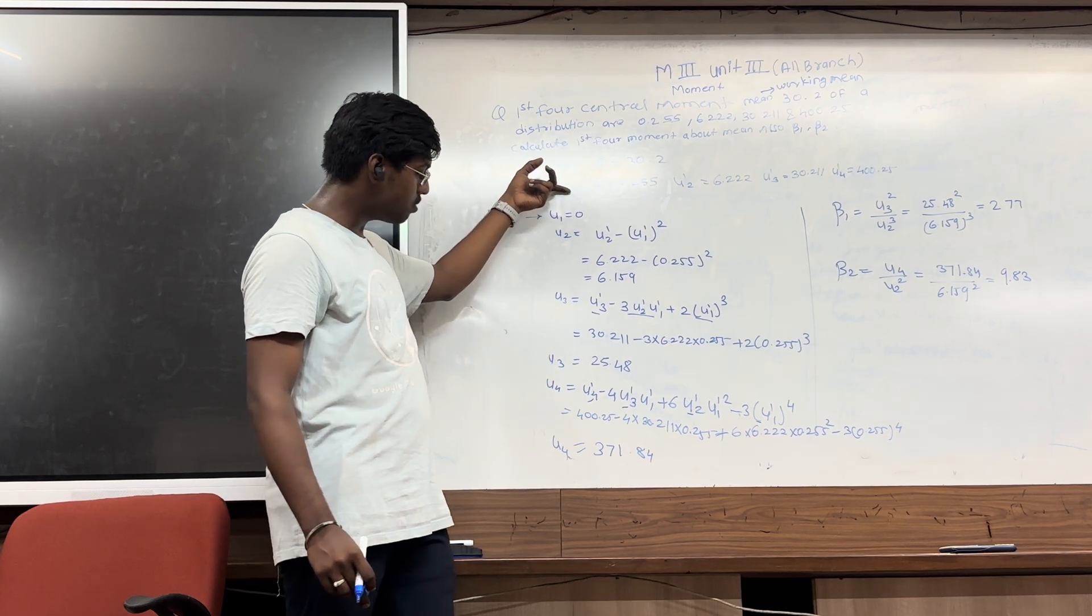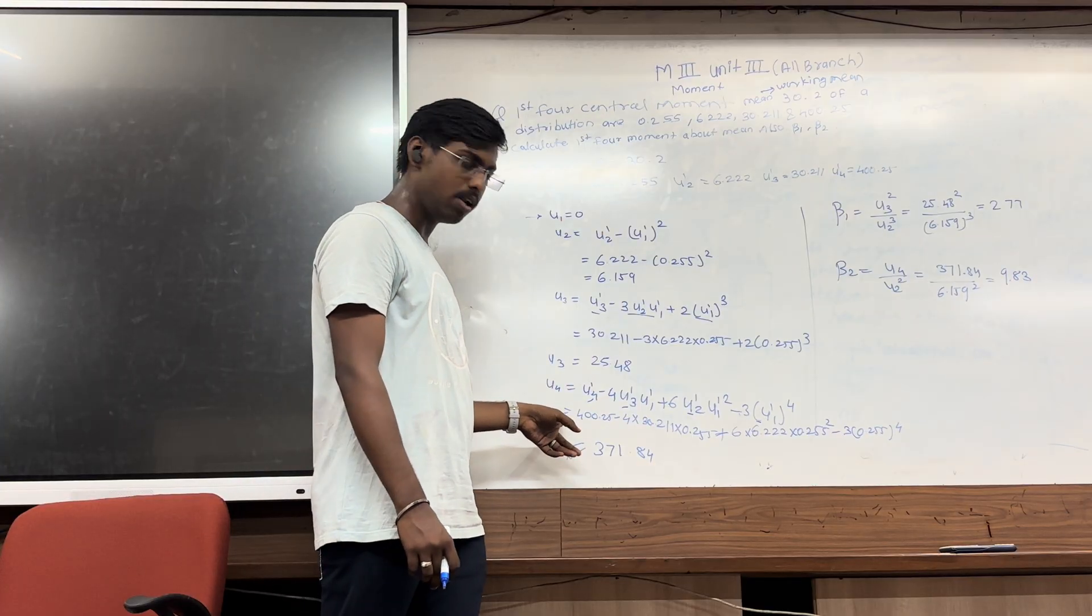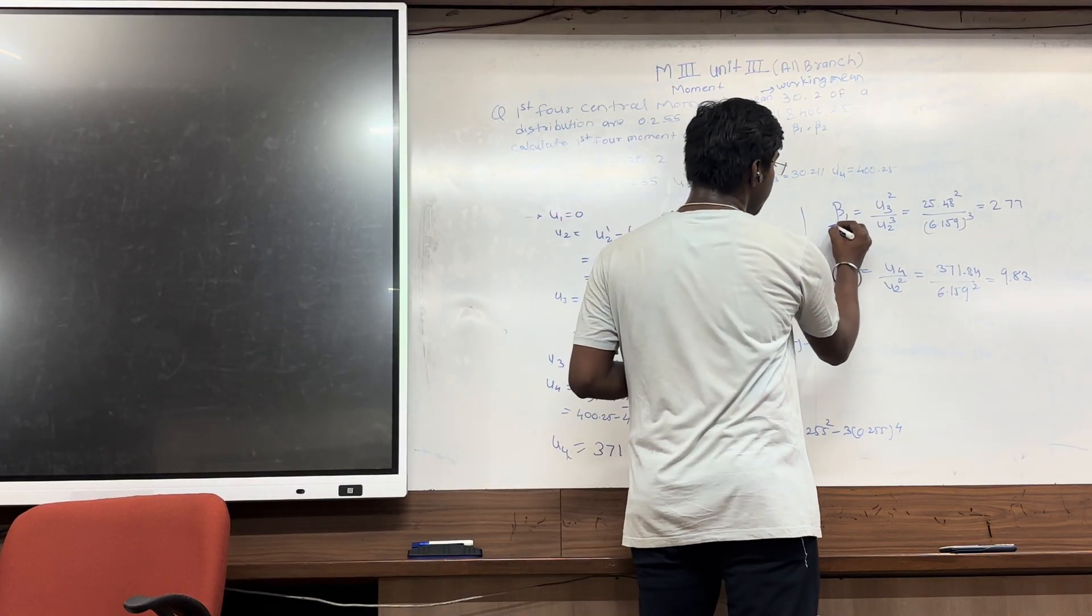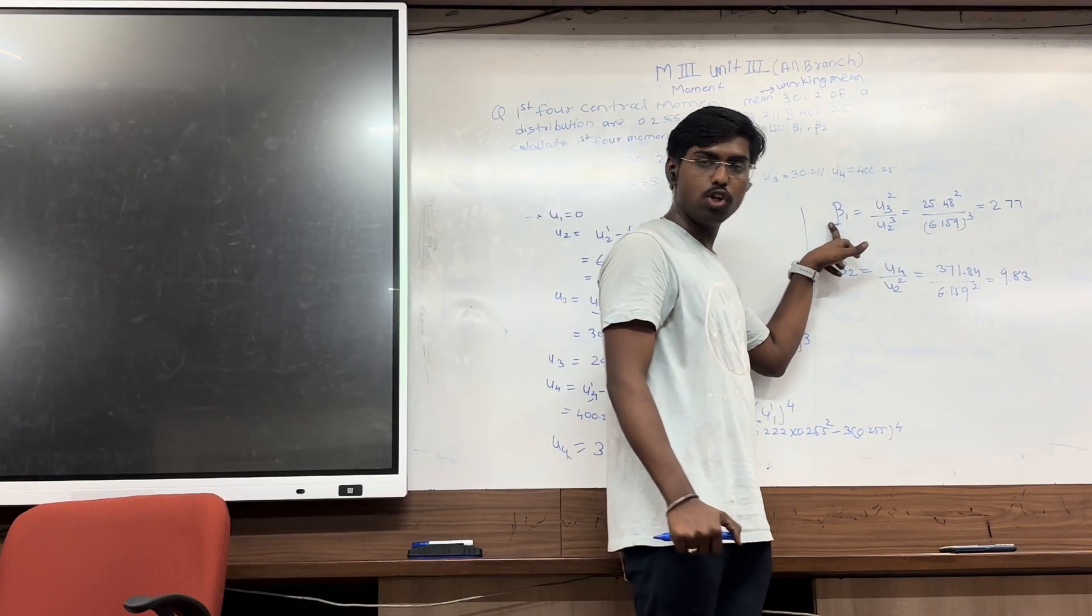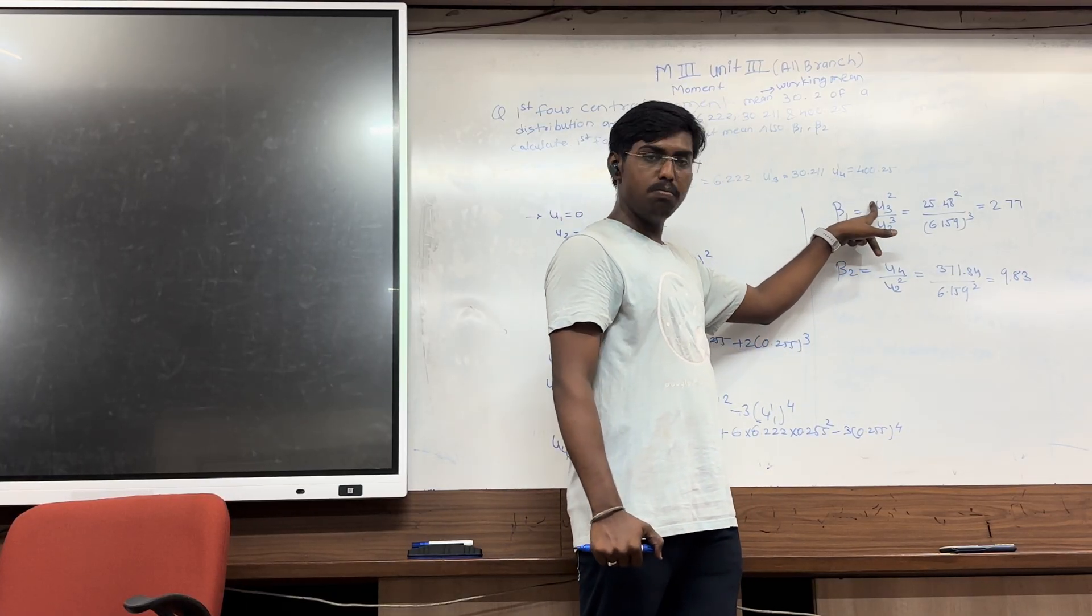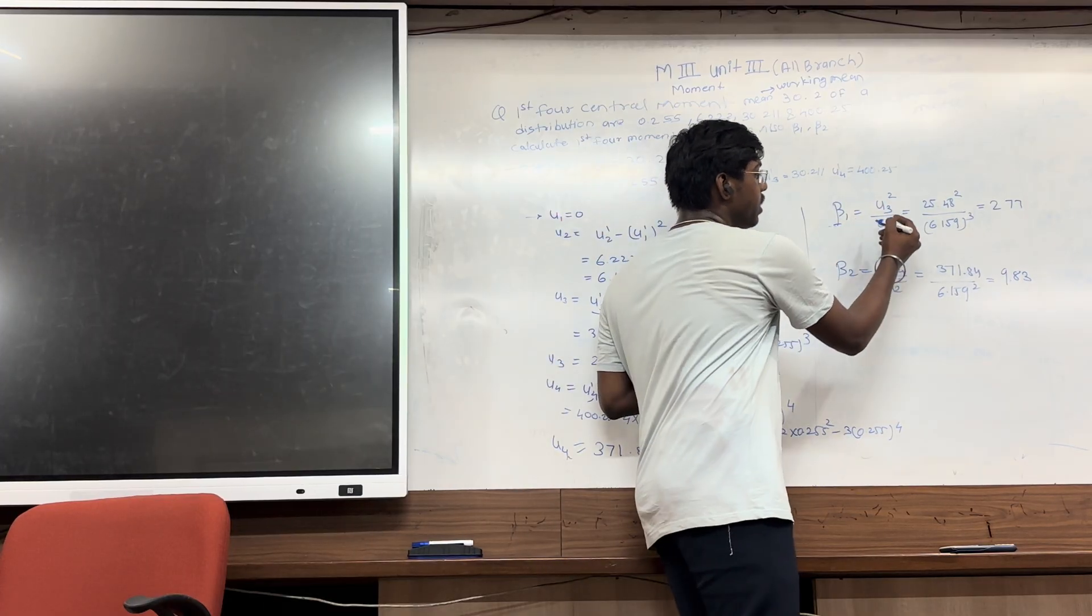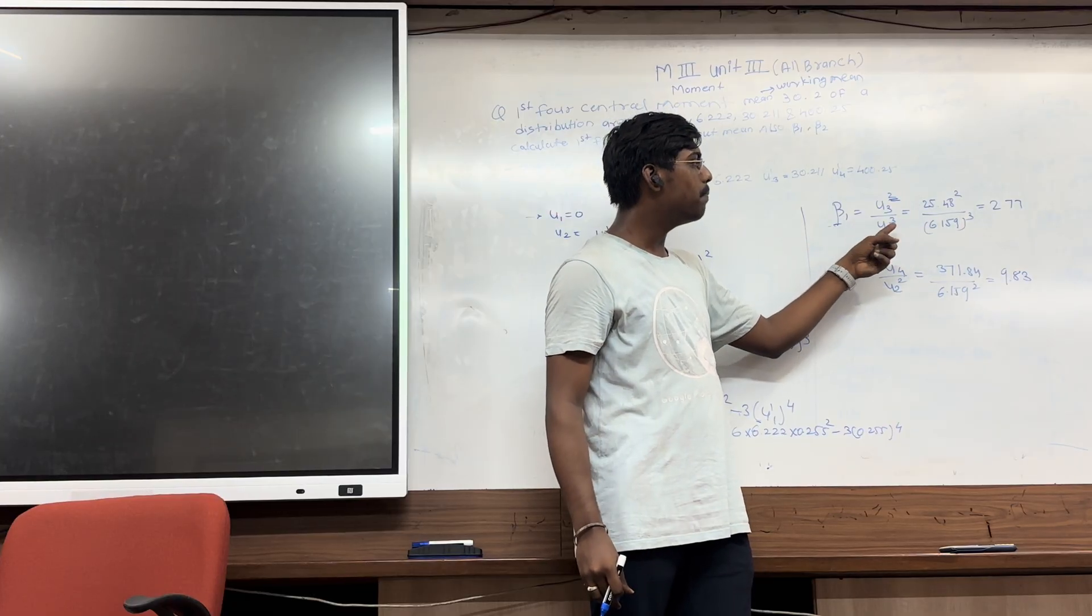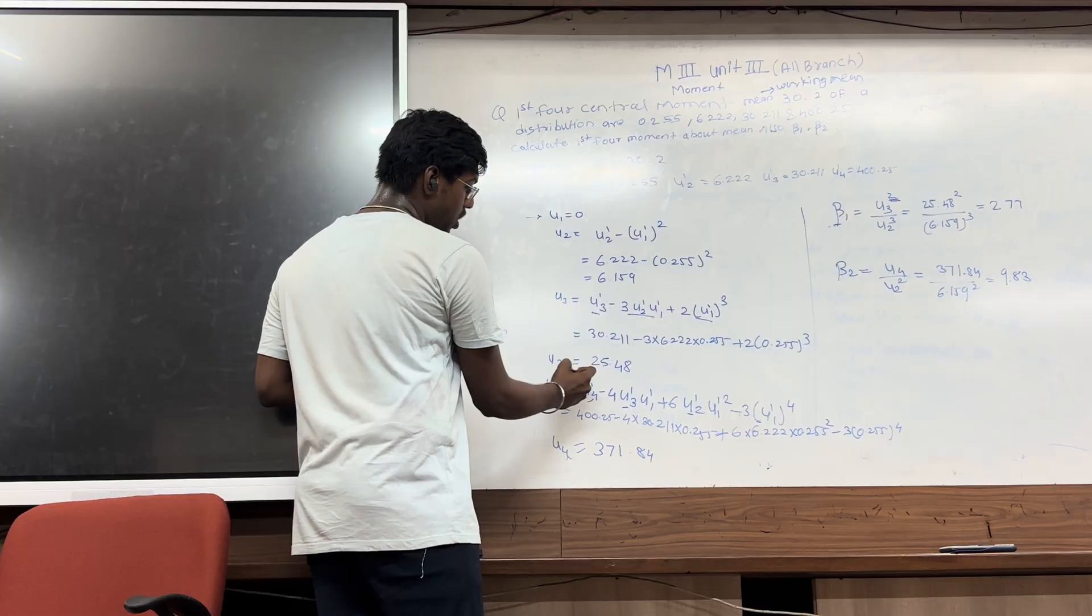So put the given raw moment's values in this equation and calculate mu4. For determine beta1 and beta2, the formula is that for determination of beta1, it is mu3 divided by mu2, and it is mu3 square divided by mu2 bracket cube.